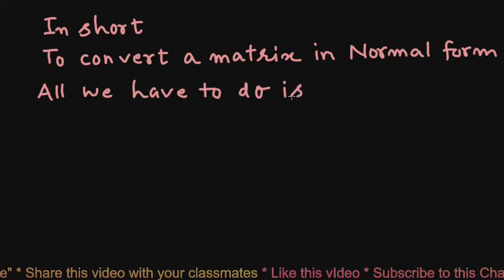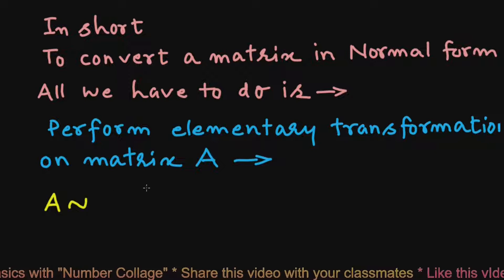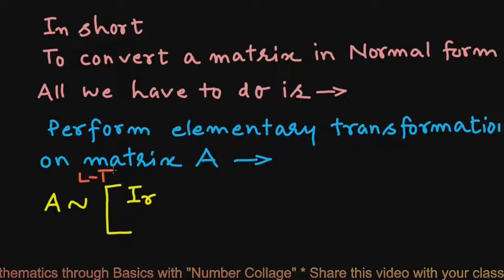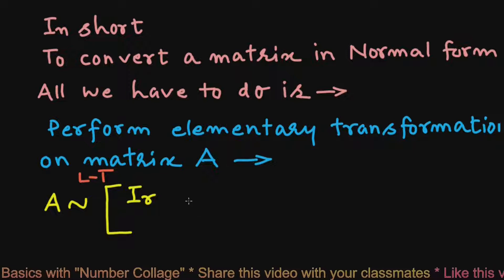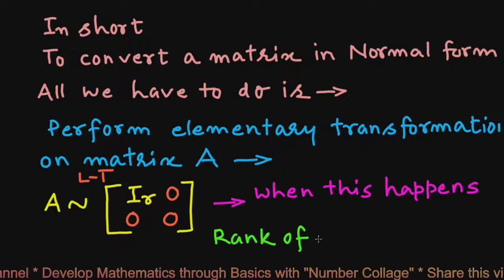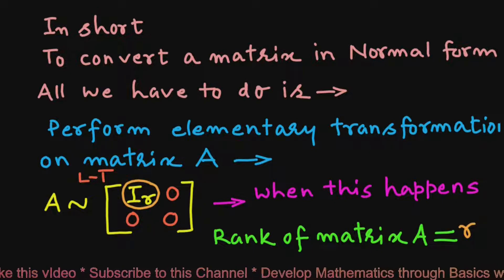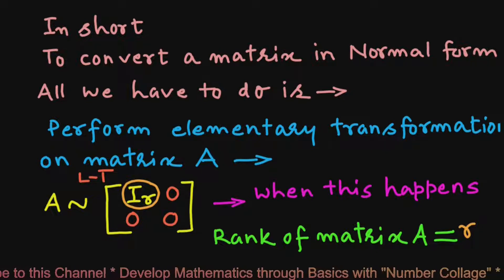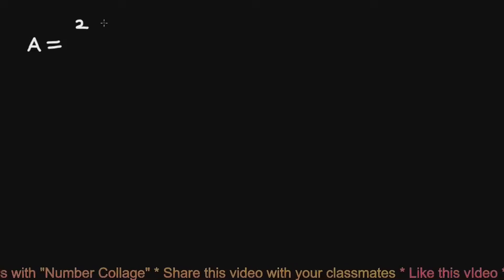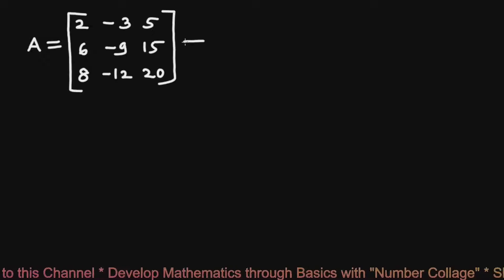To convert a matrix into normal form, all we have to do is perform elementary transformations on matrix A such that A is converted into a matrix with a unit matrix of rank R in the top-left corner and all remaining elements equal to 0. When this happens, the rank of matrix A equals the rank of this unit matrix R. So we can find the rank of a given matrix by converting it into normal or canonical form.